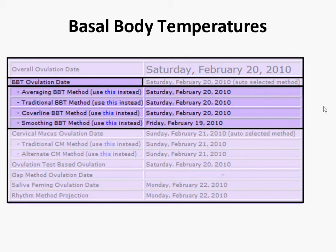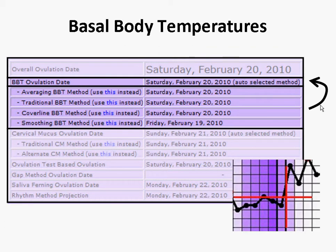The software will automatically pick which of these methods should be used to produce the basal body temperature ovulation date, which is shown on your chart using the crosshairs as indicated below. By default, information about your cycle and the actual recorded temperatures is used to decide which of the techniques makes the most sense to be used, shown as the auto-selected method here. You can also manually decide on a cycle-by-cycle basis which you'd like to apply by using the use-this-instead link shown to the left.